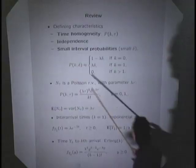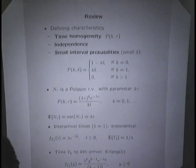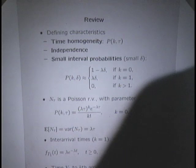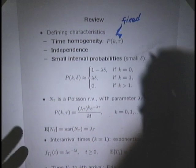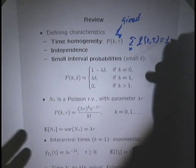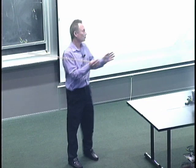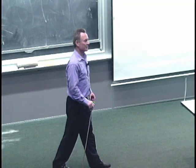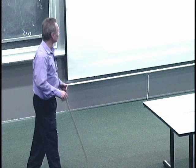We have a probability mass function for the number of arrivals k during an interval of a given length tau. There's a time homogeneity assumption: the only thing that matters is the duration of the time interval, not where the interval sits on the real axis. Then we have an independence assumption: intervals that are disjoint are statistically independent from each other. Any information about arrivals during one time interval doesn't change beliefs about what happens during another time interval.